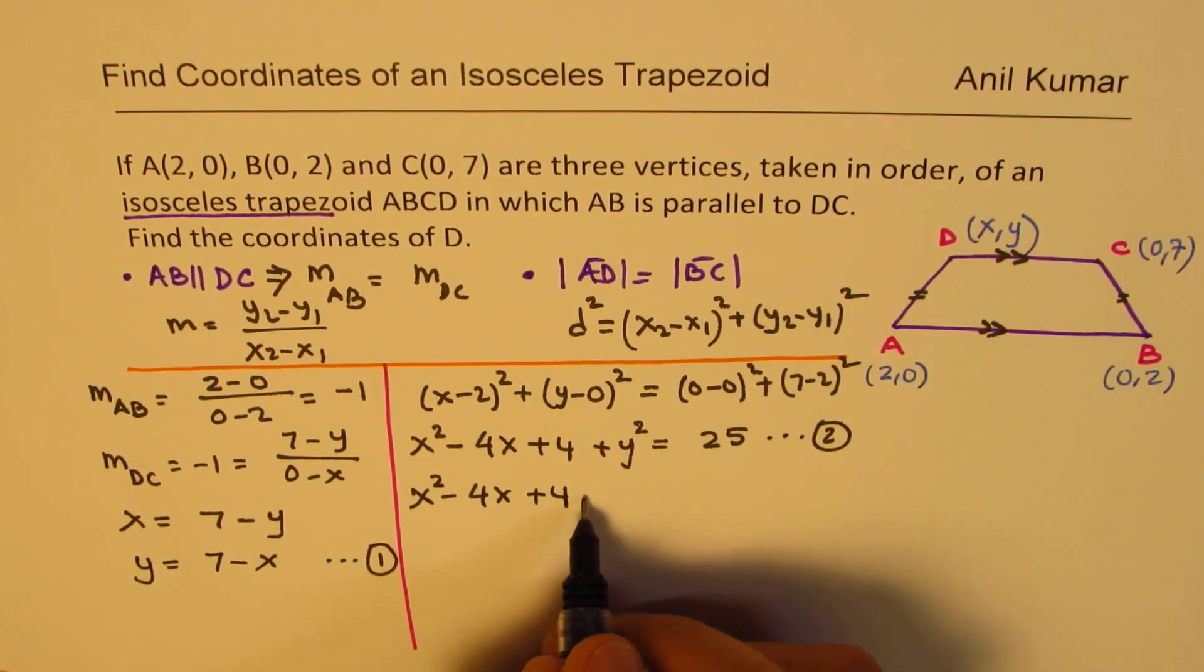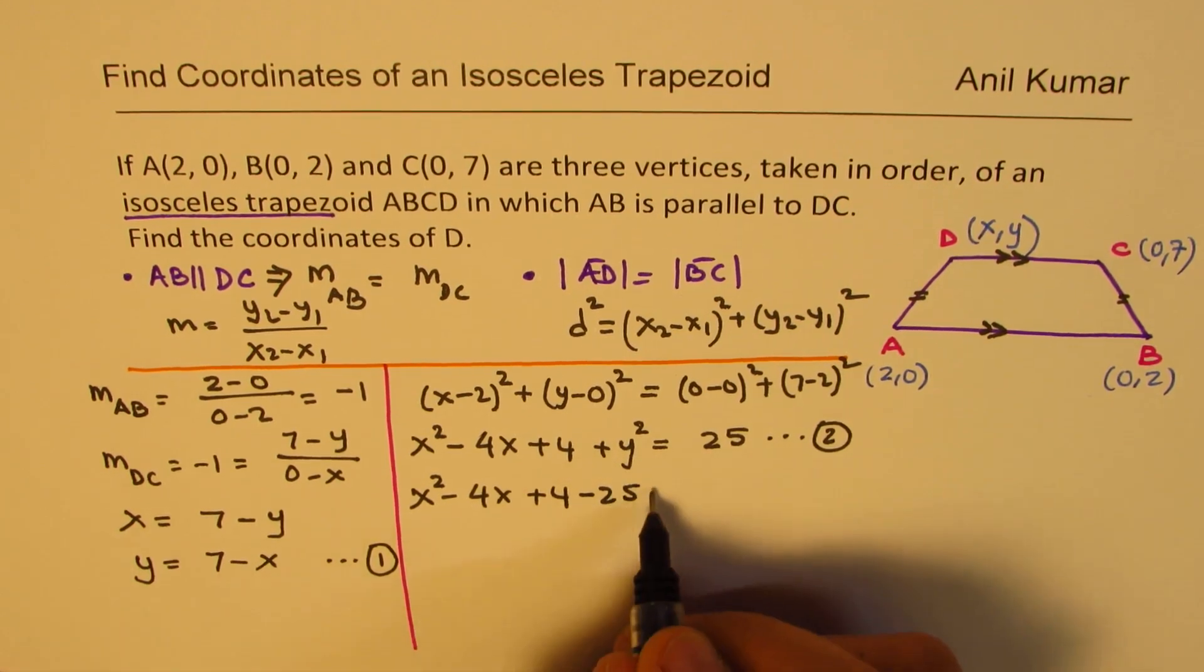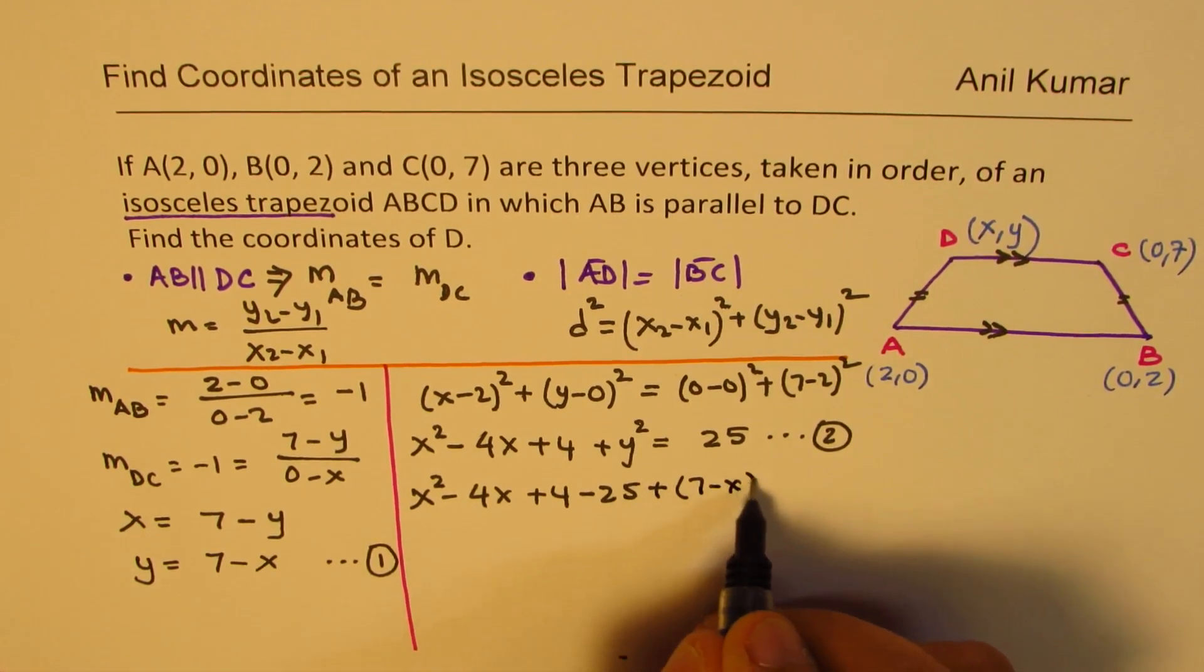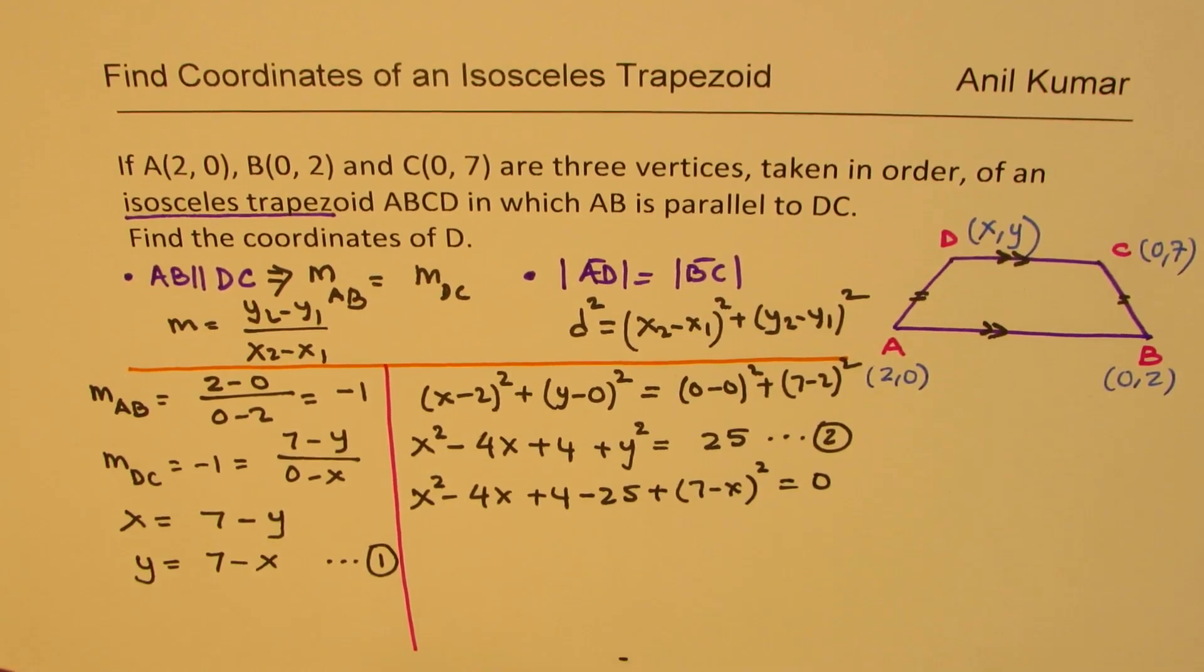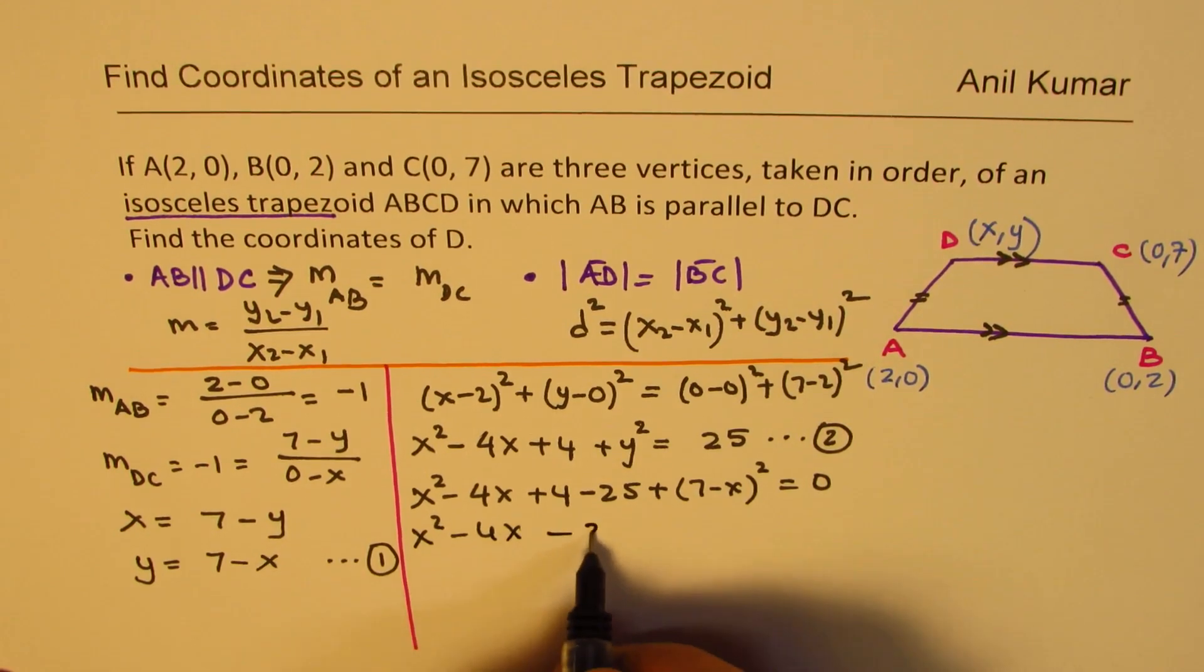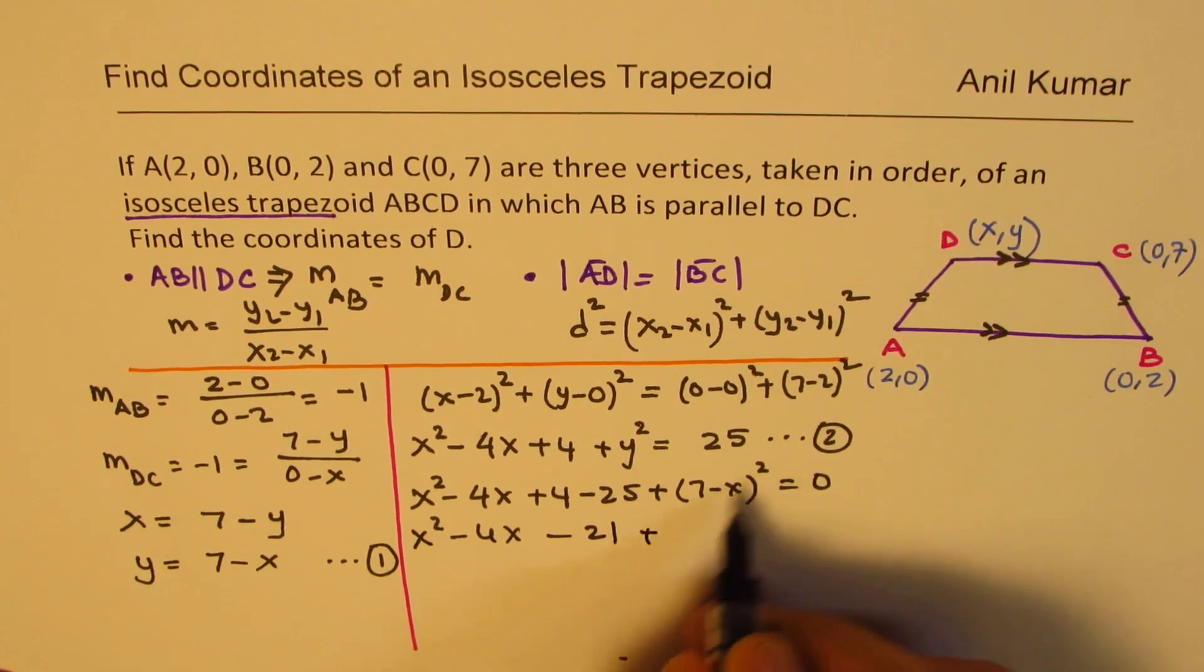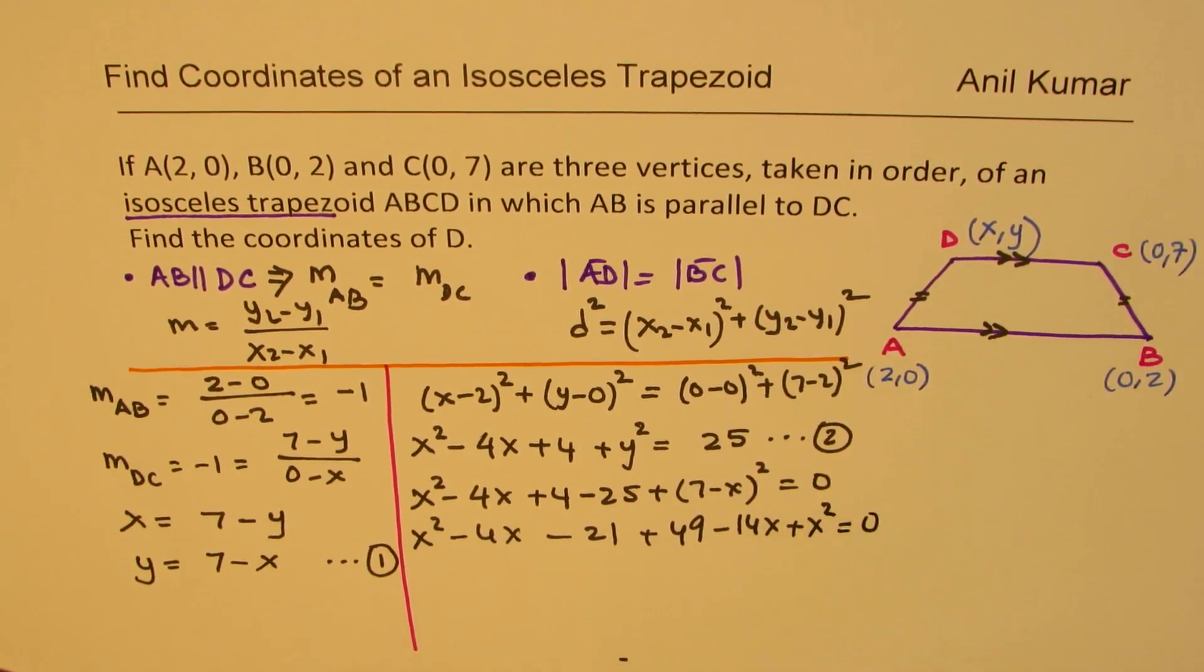Well, we could have made it, let me write down this as minus 25 on this side. And then Y² is (7-X)² equals to 0. Okay, let's open this bracket. So we have X² minus 4X, that is minus 21. Square of 7 is 49 minus 2AB, which is 14X plus X² equals to 0.